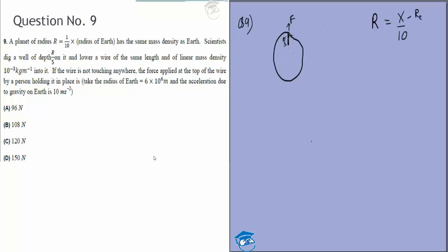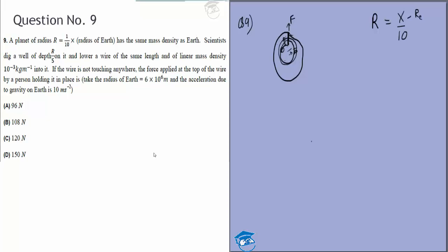So somebody will be holding it at the top by a force F because that will need to compensate for the gravitational attraction of this wire. This F will be equal to the gravitational force felt by this wire, which we can find out quite easily.